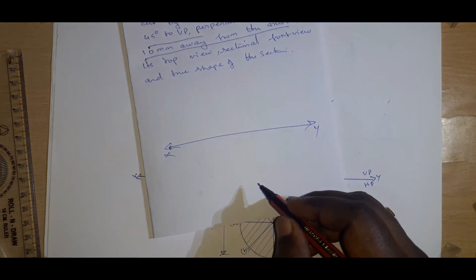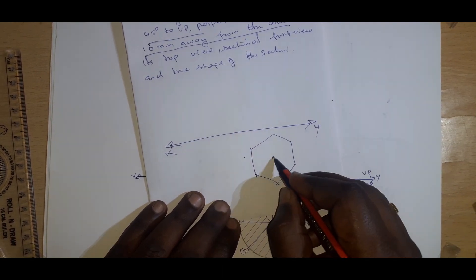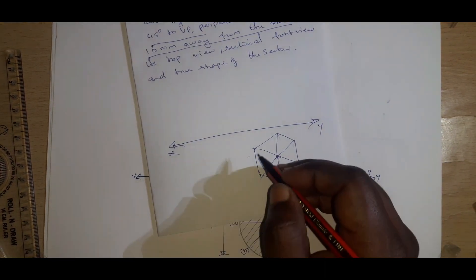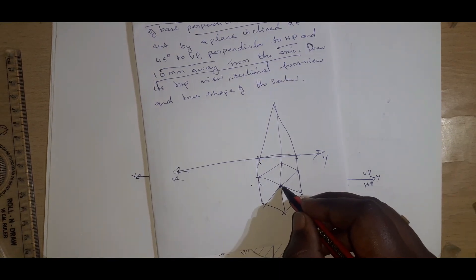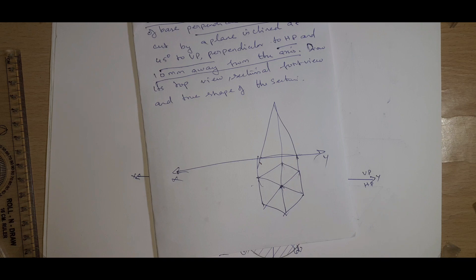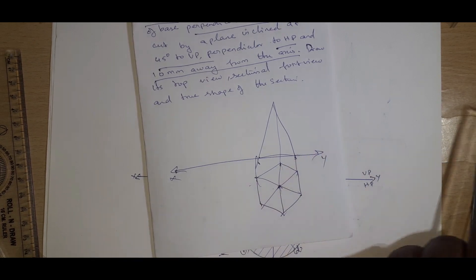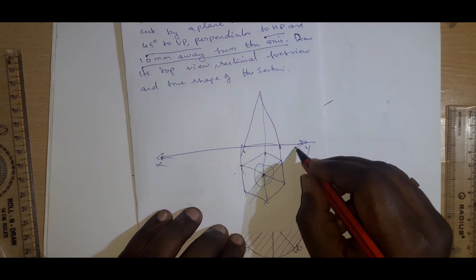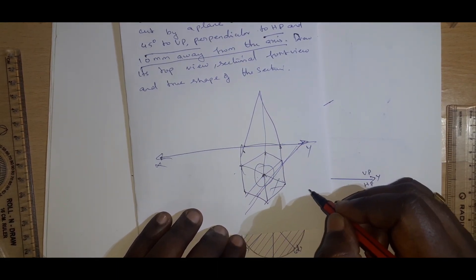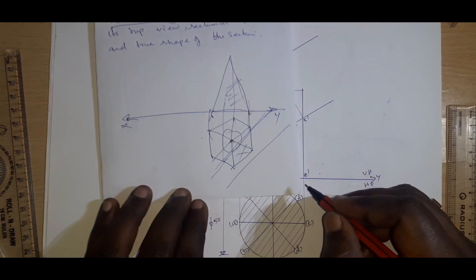So for this we need to draw the sectional view. We can see how we are going to proceed — XY line. It is said 2 of the sides are perpendicular to VP, so the solid pyramid has to be oriented accordingly. Next I can project it to the top. So this is your solid. Here this is the axis point — it is perpendicular to HP, and the cutting plane has to be drawn like this. It will cut the solid this way. 10mm away from the axis means take the compass, set 10mm radius, and draw a small circle, then draw a tangent at 45 degree inclination. We draw this and the cut portion has to be removed.